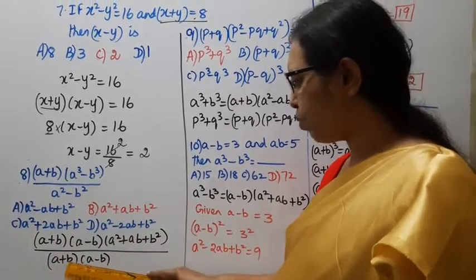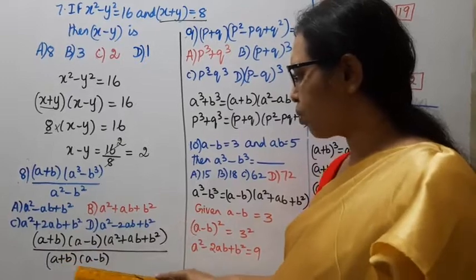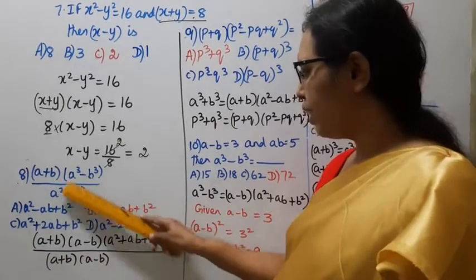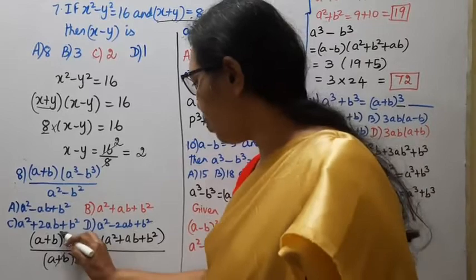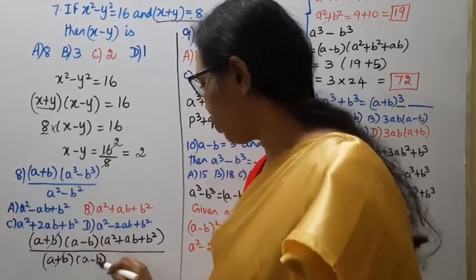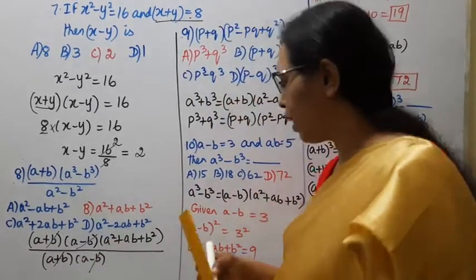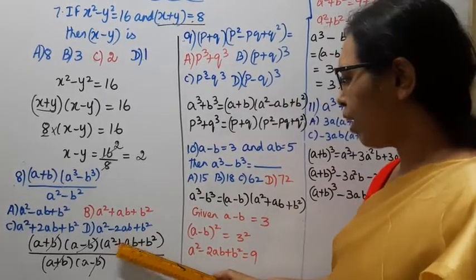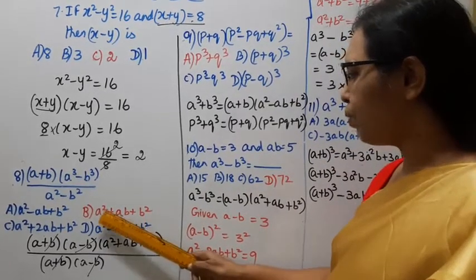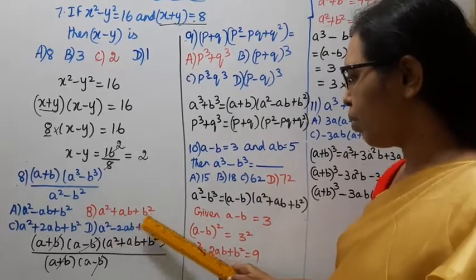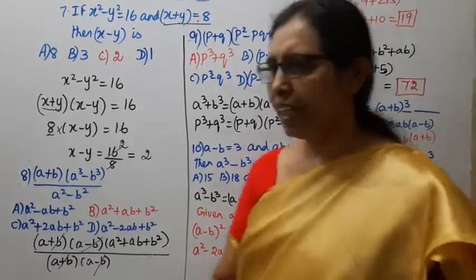So A squared minus B squared is A plus B into A minus B. Expanding A cubed minus B cubed: A minus B into A squared plus AB plus B squared. The A plus B terms cancel, and the A minus B terms cancel. The remaining answer is A squared plus AB plus B squared. That is option B — the correct answer.